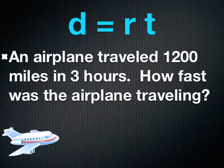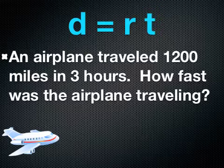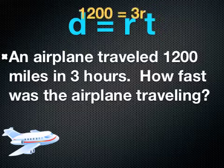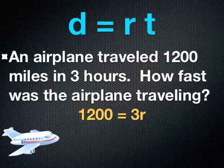Again, using the distance formula, it says an airplane traveled 1,200 miles in 3 hours. How fast was the airplane traveling? Notice I am given my distance 1,200 miles and the time 3 hours. So this time, I am going to be trying to find the rate. Plug in 1,200 for distance equals 3 times r. 3 is my time, and I'm trying to find the rate.